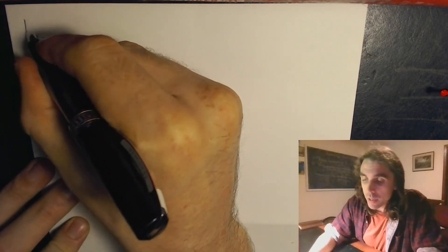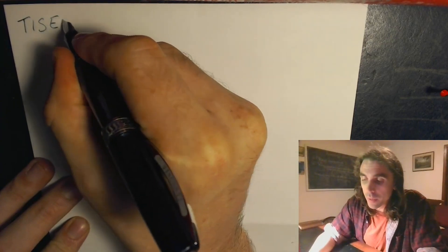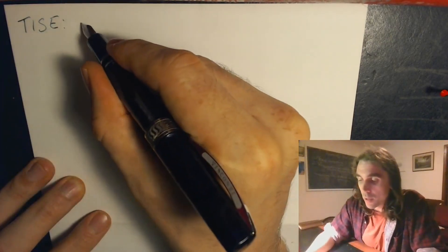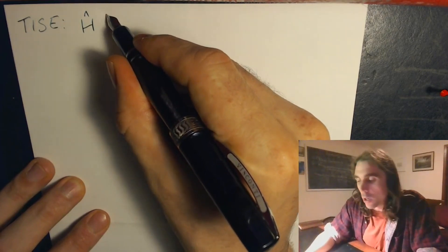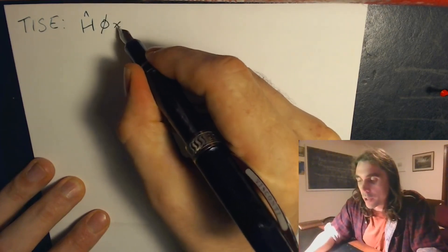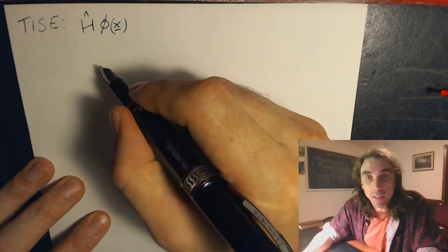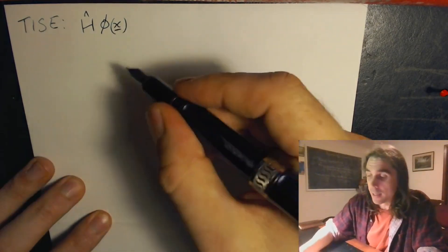Remember the time-independent Schrödinger equation is written in terms of the Hamiltonian acting on some wave function phi of x, and this is just the time-independent part. Remember we can always add the time-dependent part in later.